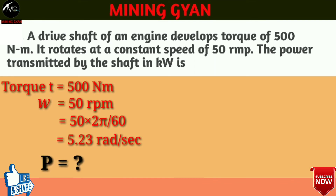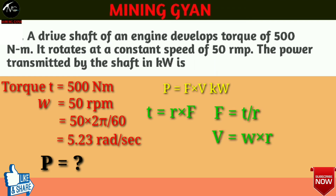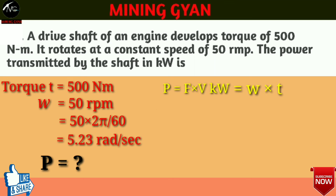Power transmitted by shaft निकालना है। Power = force × velocity, लेकिन यहां force नहीं दिया, rotational speed दिया है। हमें पता है torque = r cross f, इसलिए f = torque/r, और v = omega × r। इन्हें power के formula में रखने पर एक नया formula निकलता है: power is equal to omega × tau। Omega = 5.23 और tau = 500 पूट करने पर answer आएगा 2.615 kilowatt।